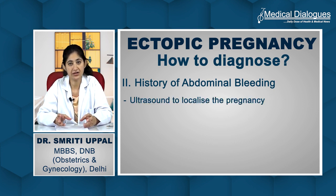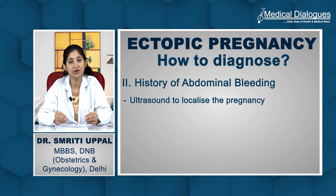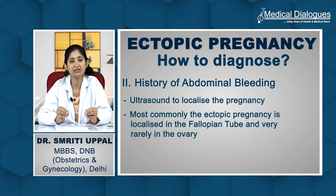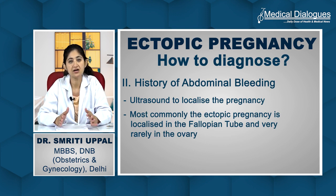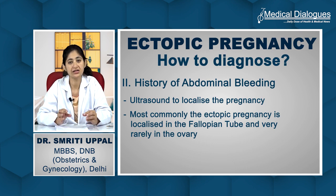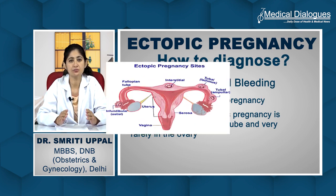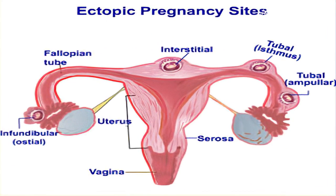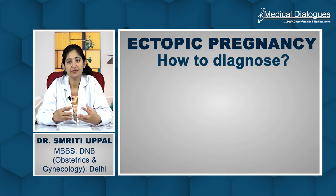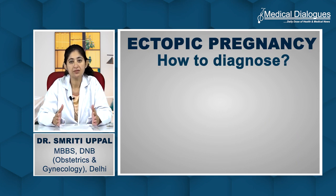The ultrasound will help you either localize the pregnancy or find out where the abnormal pregnancy is. Most commonly — in 95% of cases — the abnormal pregnancy will be lodged in the tube. A few percent also occur in the ovaries or in the abdomen, though they are very rare and more easily diagnosed compared to tubal pregnancies. We will focus mostly on tubal pregnancies since 95% of ectopic pregnancies are tubal in nature.